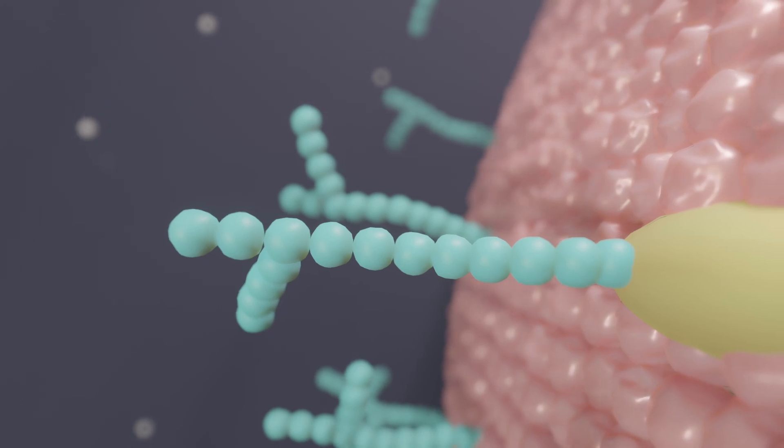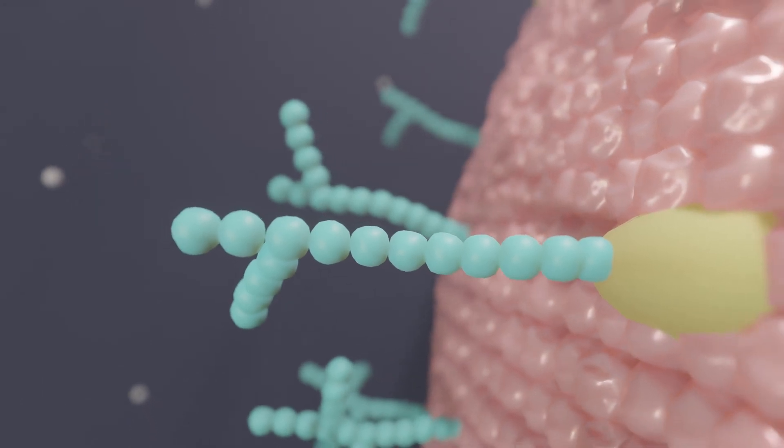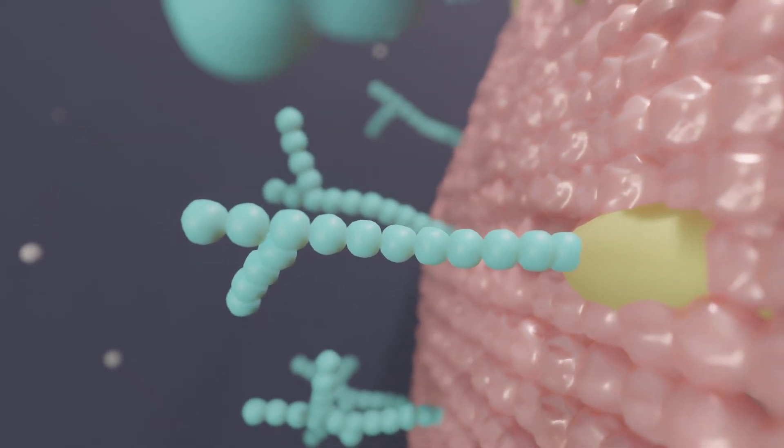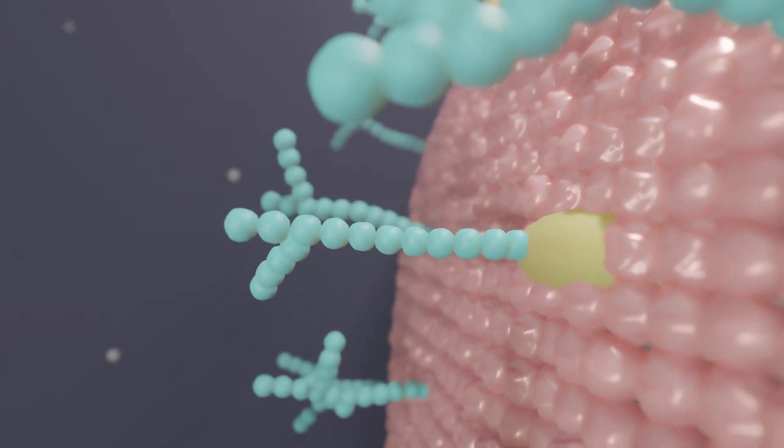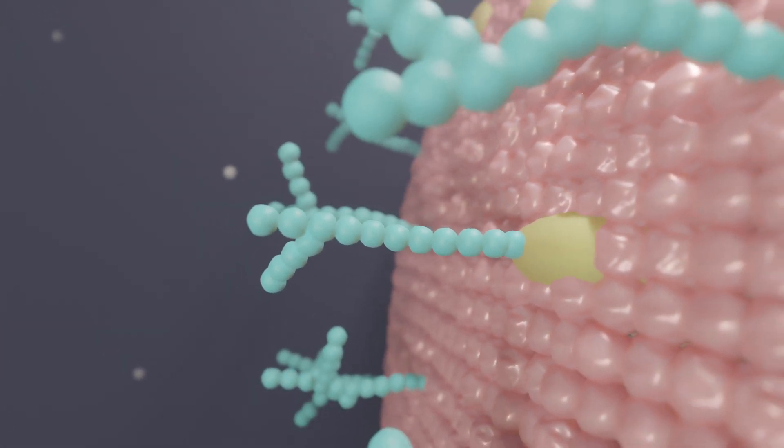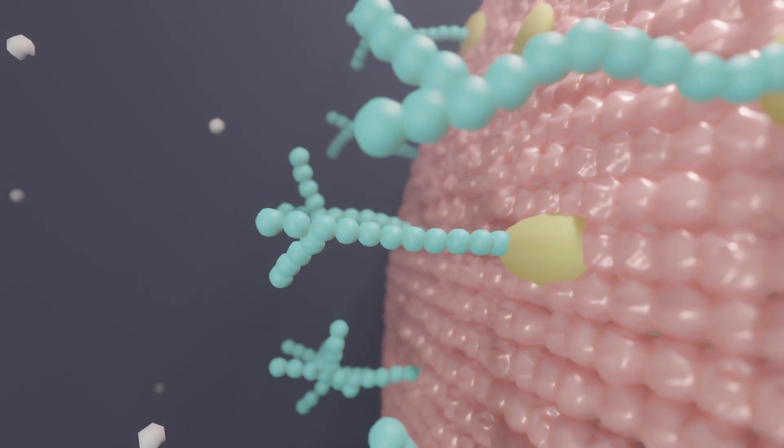Sugar molecules protrude from the outside of the cell membrane into the extracellular space. Among other things, the sugar layer serves to form tissue. In this way, it helps similar cells to recognize each other and join together to form a compound.